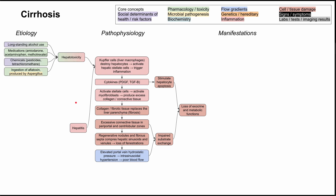First, hepatotoxicity. Long-standing alcohol use is one of the more common causes of cirrhosis. Some medications are known to have hepatotoxic effects, including amiodarone, acetaminophen, and methotrexate. Acetaminophen — that's Tylenol — toxicity is particularly well known to affect the liver. There are also chemicals that are hepatotoxic, including pesticides and tetrachloromethane. Tetrachloromethane isn't used as much as it used to be, but there are still some occupational hazards that can cause hepatotoxicity.